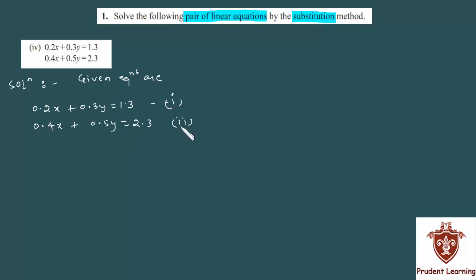Call it equation 2. Now, the equations given are in decimal form, so we can simplify them a bit. What do we do? We multiply both equations by 10.